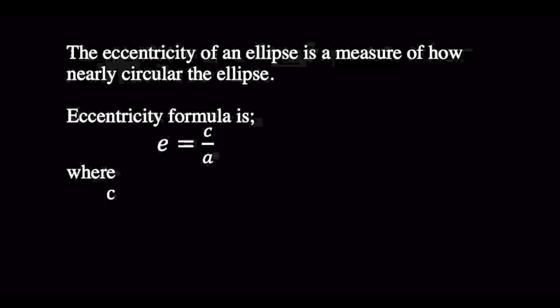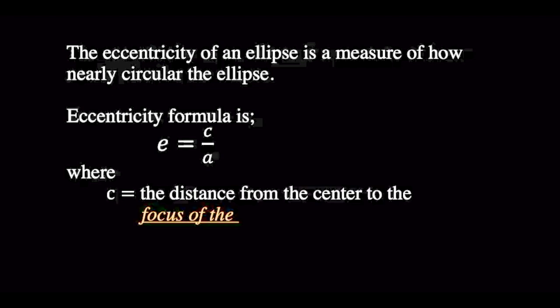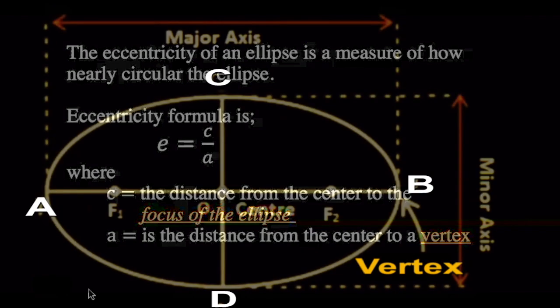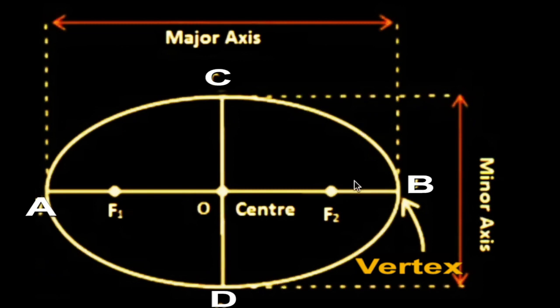Where c is the distance from the center to the focus of the ellipse, and a is the distance from the center to the vertex. This is an ellipse, this is the center point, and a...